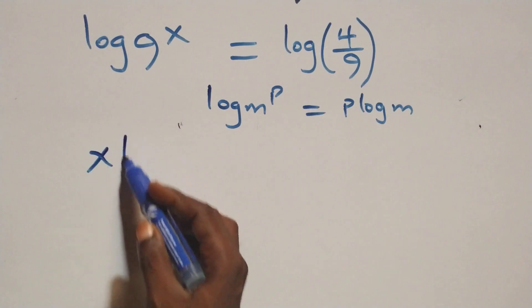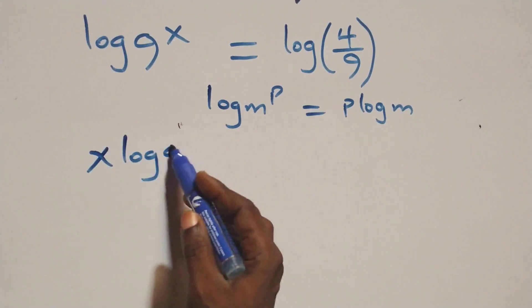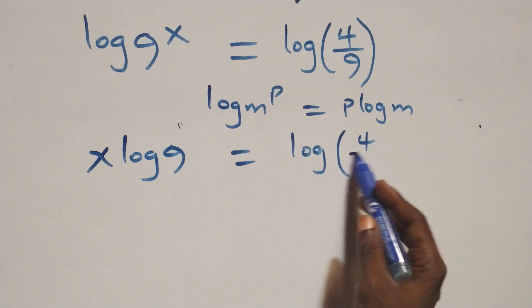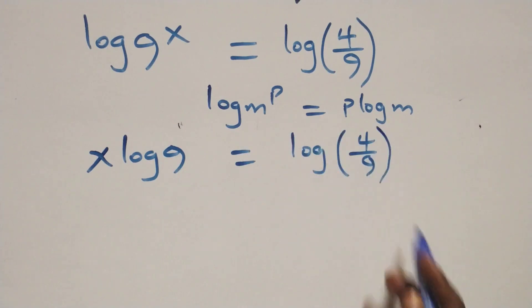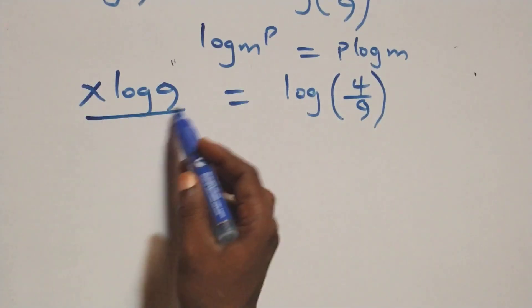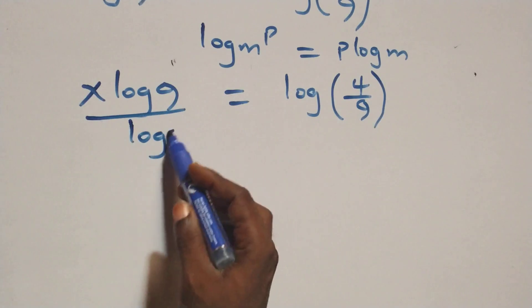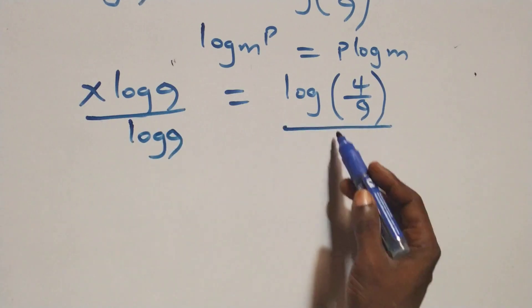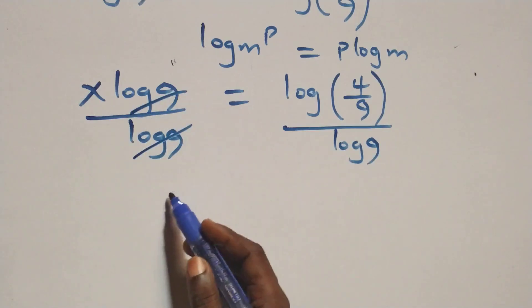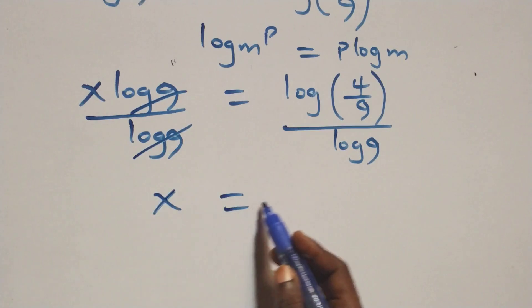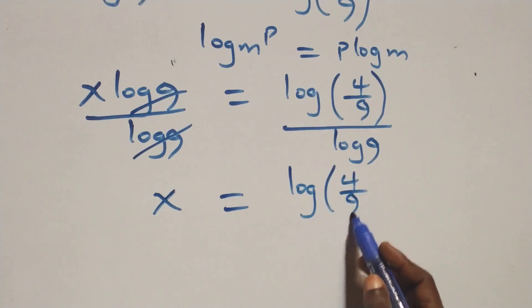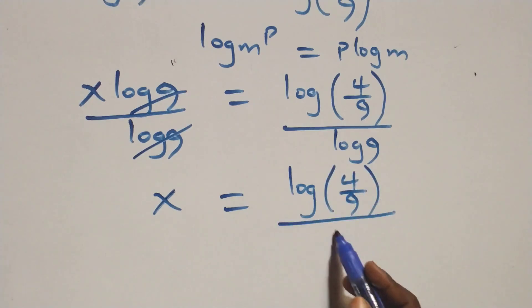From here, we have x log 9 equals log(4/9). Next, we divide both sides by log 9 — divide this side by log 9 and also divide this side by log 9 — which implies the log 9s cancel each other, leaving x equal to log(4/9) divided by log 9.